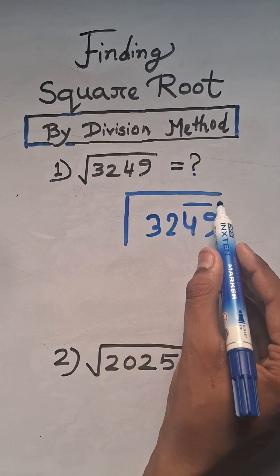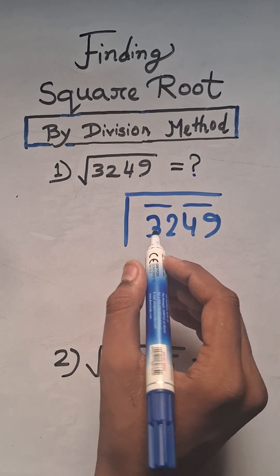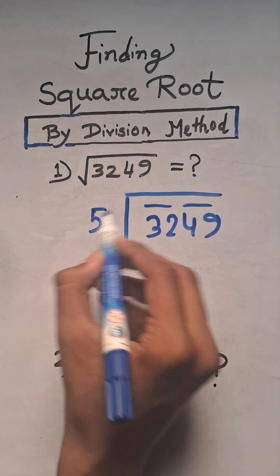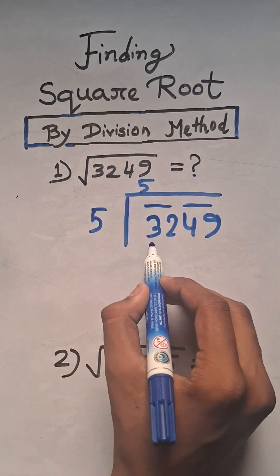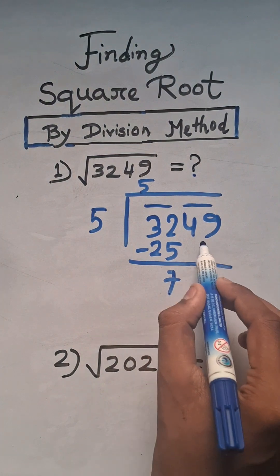from right hand side. It is 49 and there is 32. Now we have to find the nearest least square root number of 32, which is 25. So 5 times 5 equals 25. 32 minus 25 equals 7.